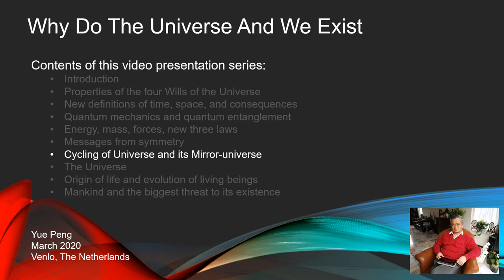In part 3 of video series 1, I shared with you the idea of the cycling model of our universe with its mirror universe. As you could see from the previous part of this video series, everything in the universe and all the physics laws have something to do with the evolution of the universe. This means we could get some understanding of the universe from our normal scientific works and also from our daily life experience. Everyone could do it — you don't need an expensive particle collider, telescope, or complicated mathematics. I got my understanding of the universe in this way.